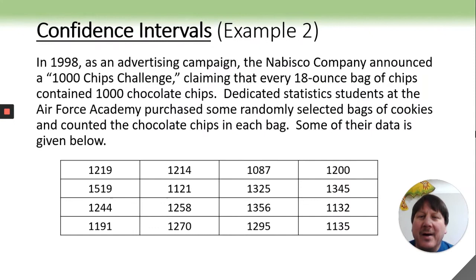I want to do another example, one where we have data. This is an interesting example, 1998, I remember this advertising campaign from the Nabisco Company, the 1,000 Chip Challenge, claiming that they had over 1,000 chocolate chips per bag per 18-ounce bag. So apparently some researchers at the Air Force Academy bought a bunch of bags, and this is just a little bit of their data.